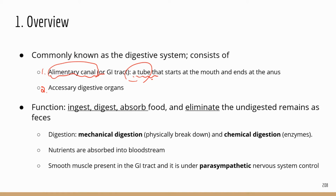The general functions of the system are to ingest — taking in food; digest — breaking down food; absorb — when food is broken down into smaller molecules, most of which are nutrients that your body absorbs; and lastly, to eliminate or get rid of unusable food as feces — that's the undigested parts of your food.